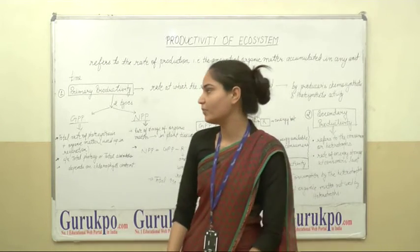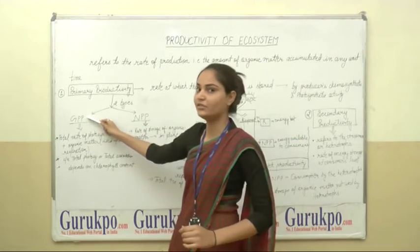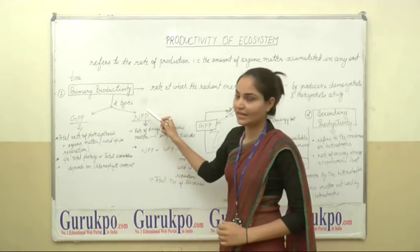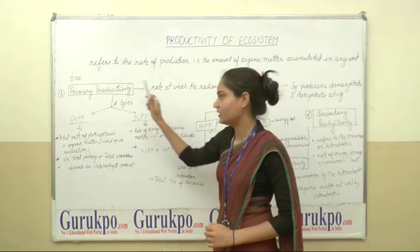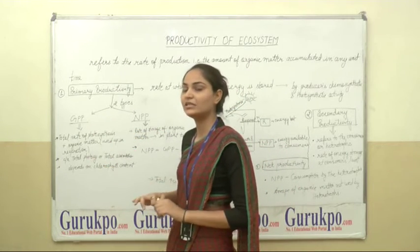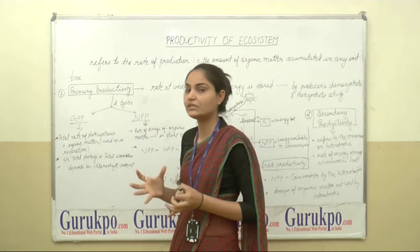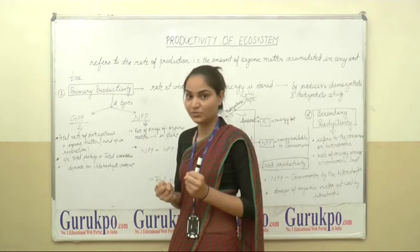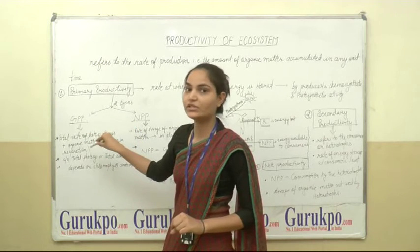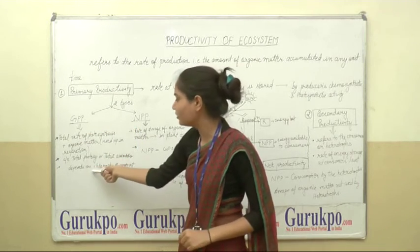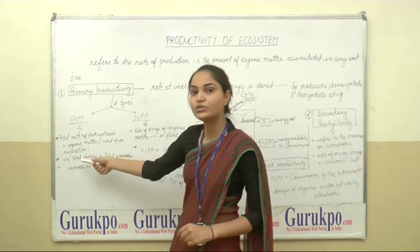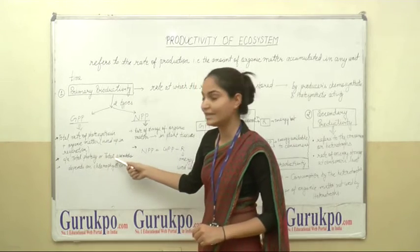Primary productivity can be divided into two parts. The first is GPP, which stands for gross primary productivity, and the second is NPP, which stands for net primary productivity. GPP, the gross primary productivity, is the total rate of photosynthesis including the organic matter used up in respiration. That is why it depends on the chlorophyll content of plants or producers. It is also called total photosynthesis or total assimilation.